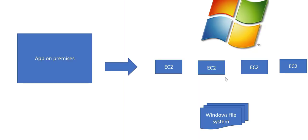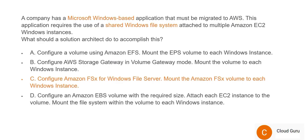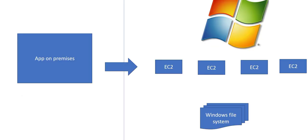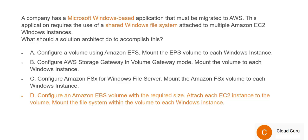FSx is for Windows — since these are EC2 instances on a Windows platform, FSx is the right file system. Option C is correct. EBS is not a shared file system; it is a block store volume attached to an EC2 instance. EC2 instances already have their own EBS, but the question asks about a shared file share — that is only FSx, not EBS. So D is wrong and C is the right answer.